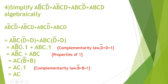Fourth question: simplify AB̄CD̄ plus AB̄CD plus ABCD̄ plus ABCD algebraically. Consider the first two terms: AB̄CD̄ and AB̄CD. The common factor is AB̄C. Taking AB̄C outside, the remaining terms are D̄ and D, so the first two terms become AB̄C into D̄ plus D.